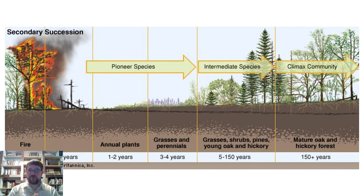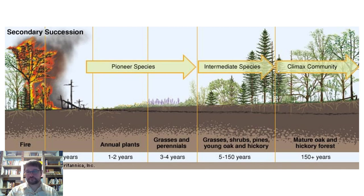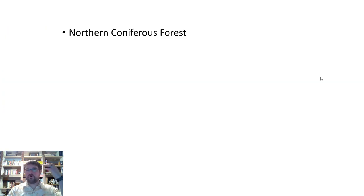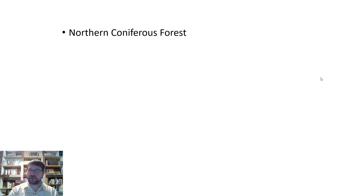By knowing your region, you'll also know how long it takes for certain trees to be established — how long for an oak to reach a height where it can shade out a pine tree — and that determines how long you'll sit in the intermediate species stage before moving into a climax community. Now, briefly, we'll run through the different forest regions of North America, the dominant species, and where they're located. The first is the northern coniferous forest region.